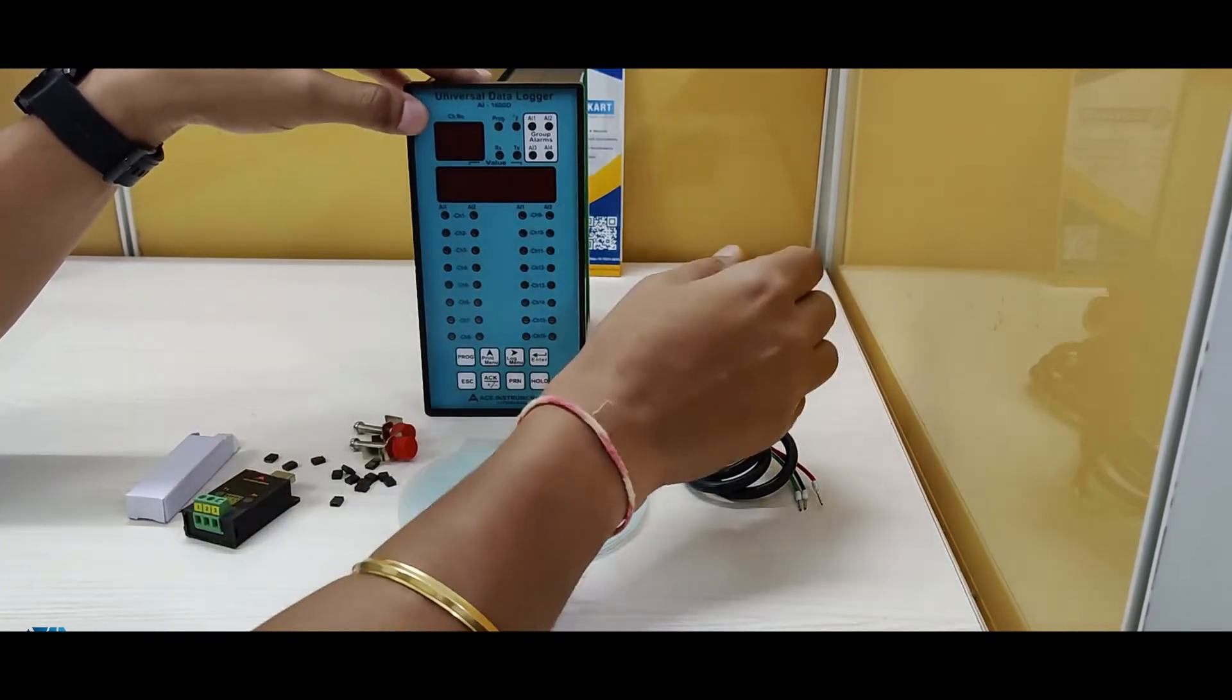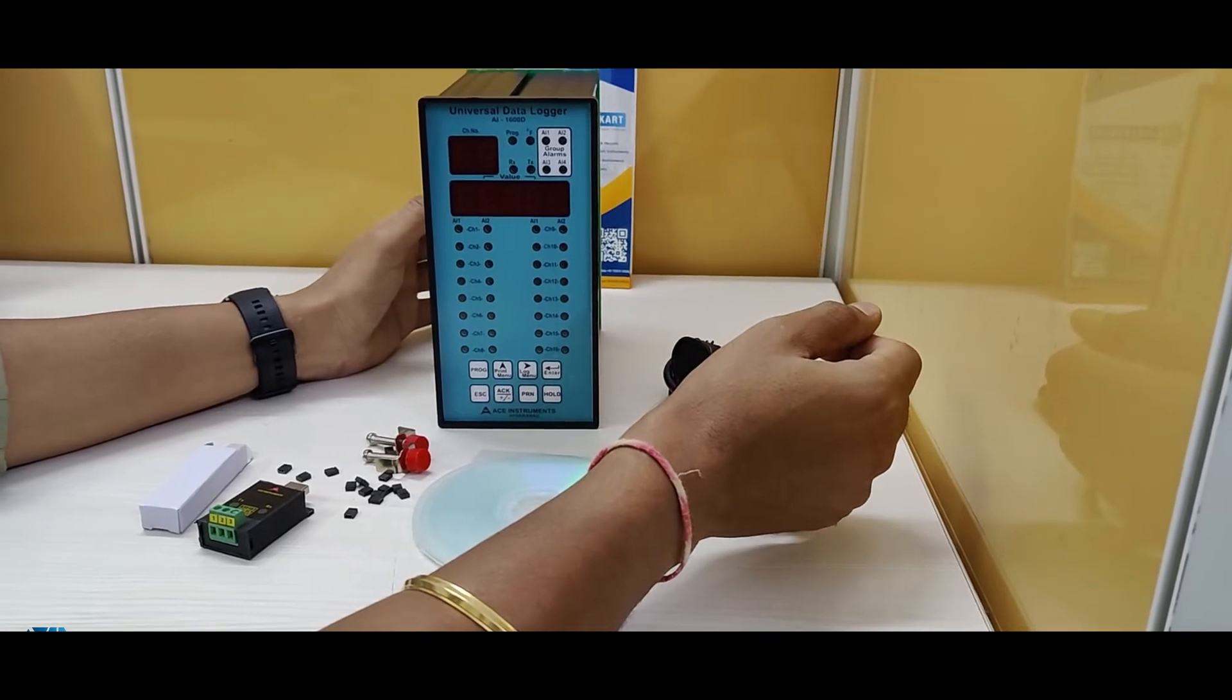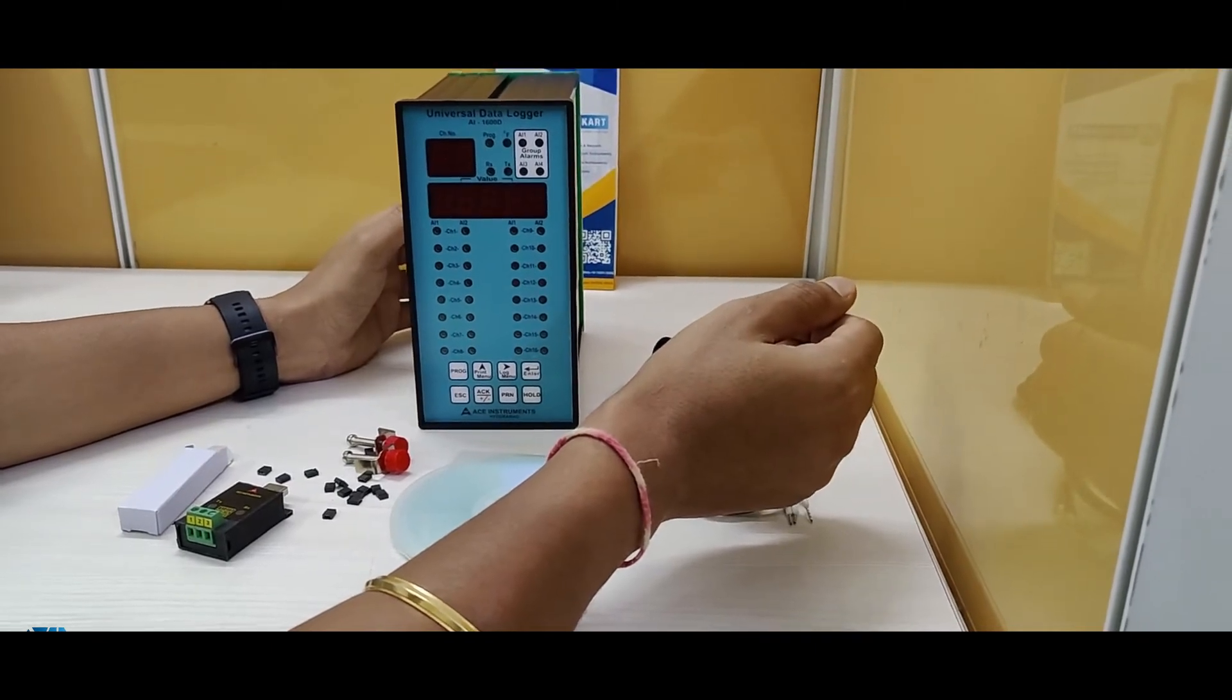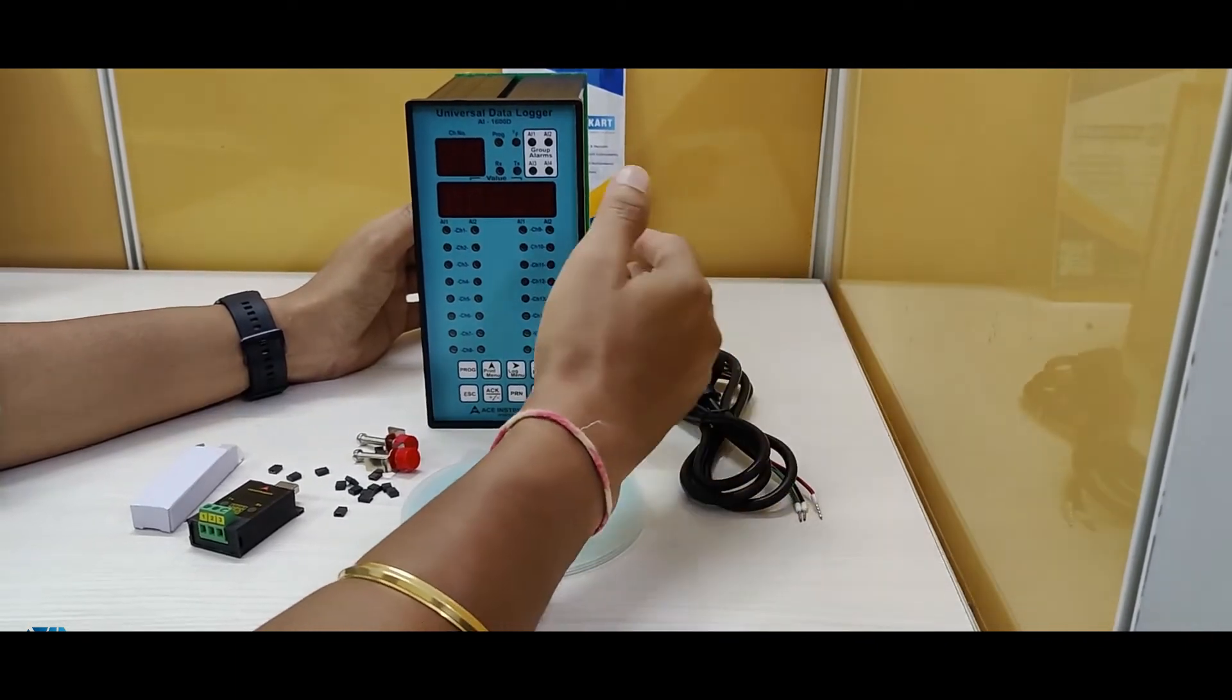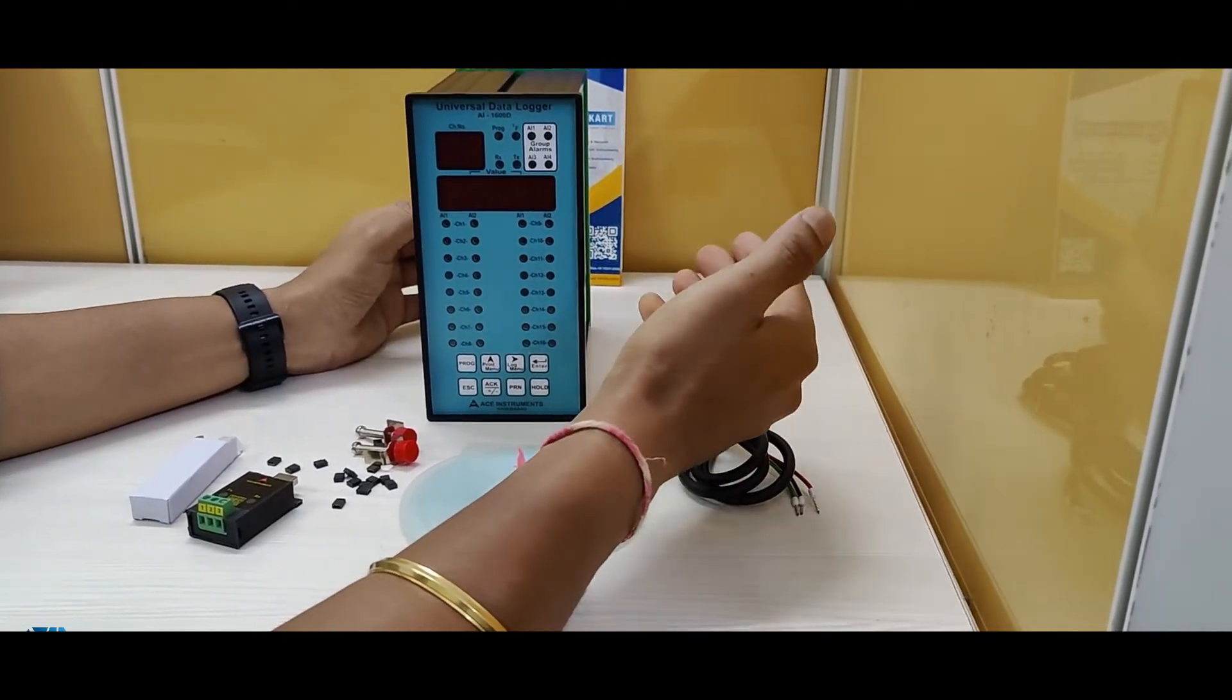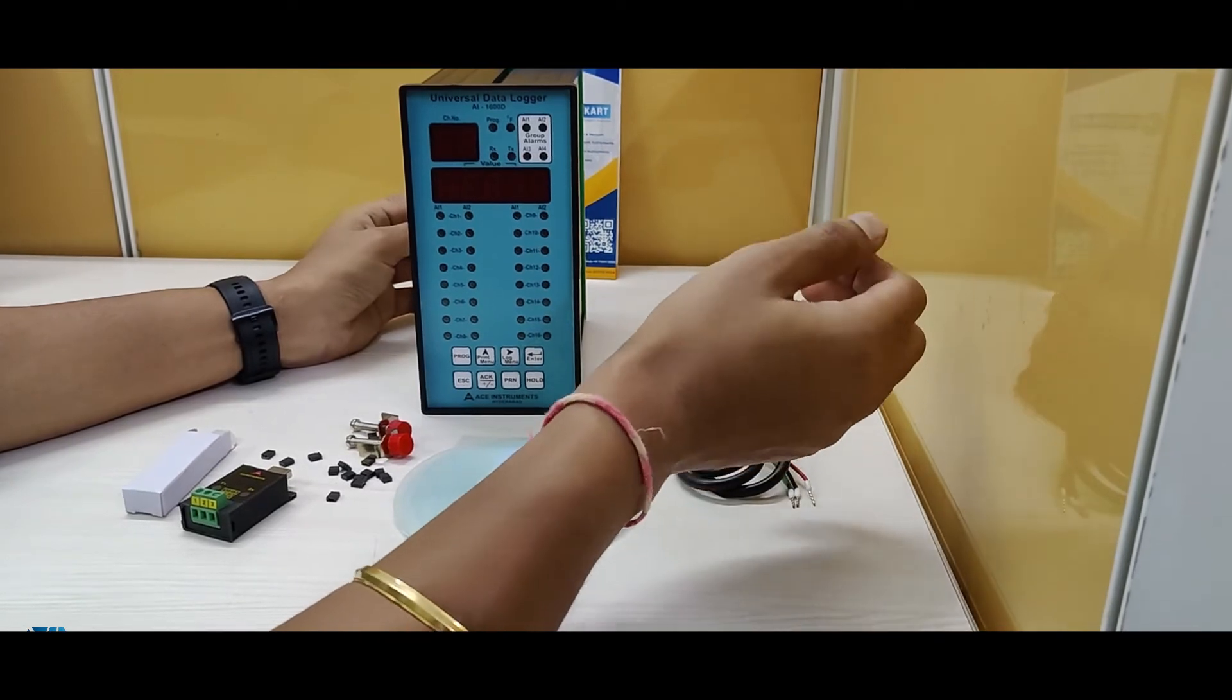Now there are two kinds of software which are available along with this data logger. One software which is 21 CFR compliant, which means that it is having a multi-level security so that no one can tamper the data, and other software which is a standard software connected to the PC just to see the temperature or whatever parameter is connected in a graphical or tabular manner where you can analyze this data.